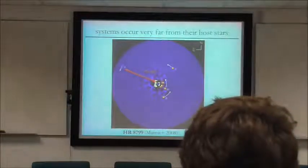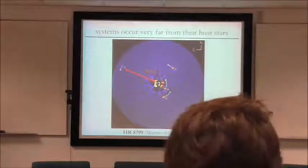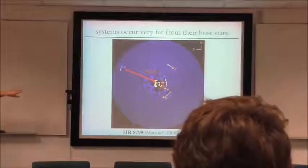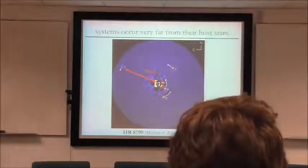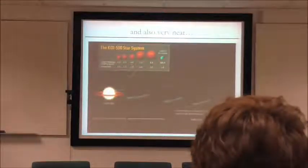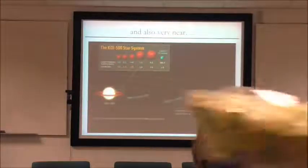We know that systems can occur very far from their host stars, like the HR 8799 system — a system of four planets, all about a Jupiter mass or larger, orbiting at up to 70 AU. This is a directly imaged system, so what you're seeing is thermal emission from the planets after light from the star has been blocked. We also know that systems can be found very close to their host stars. A striking example is KOI 500, which has five planets with orbital periods all less than 10 days — a lot of mass very close to their host stars.